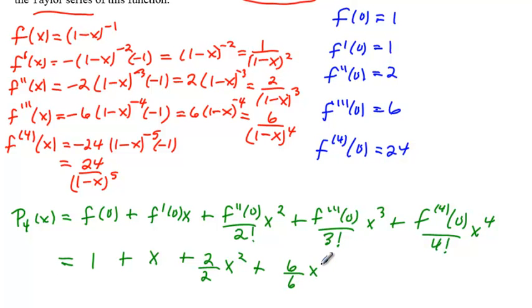plus the 3rd derivative was 6 over 3 factorial, that's a 6 as well, times x cubed, plus the 4th derivative at 0, which is 24 over 4 factorial, which happens to be 24 also, x to the 4th.